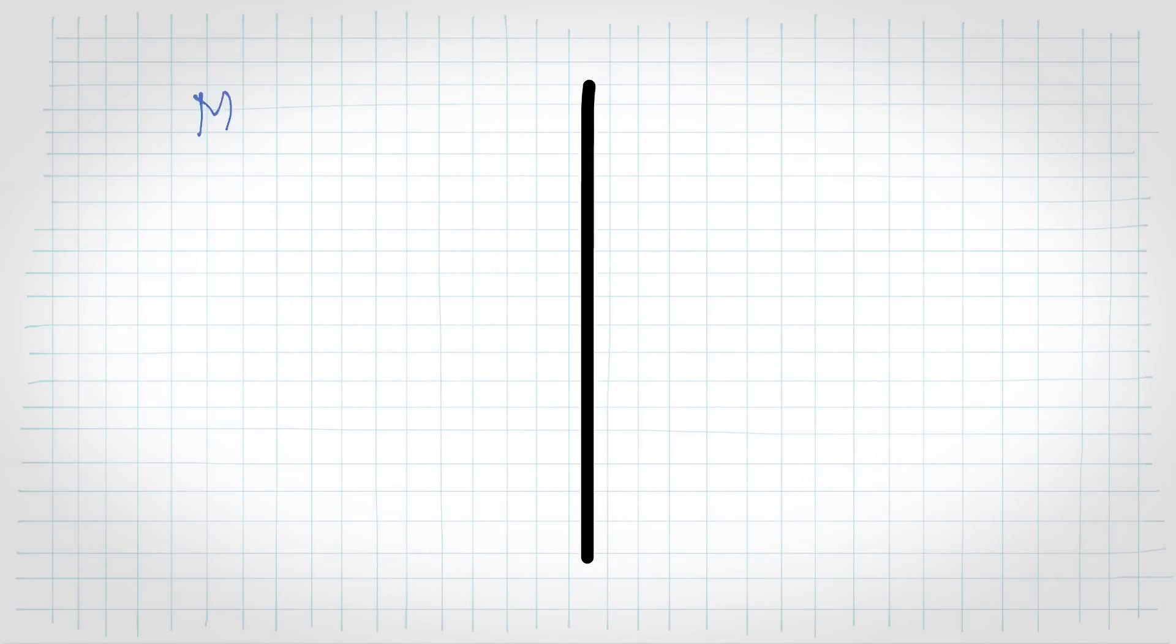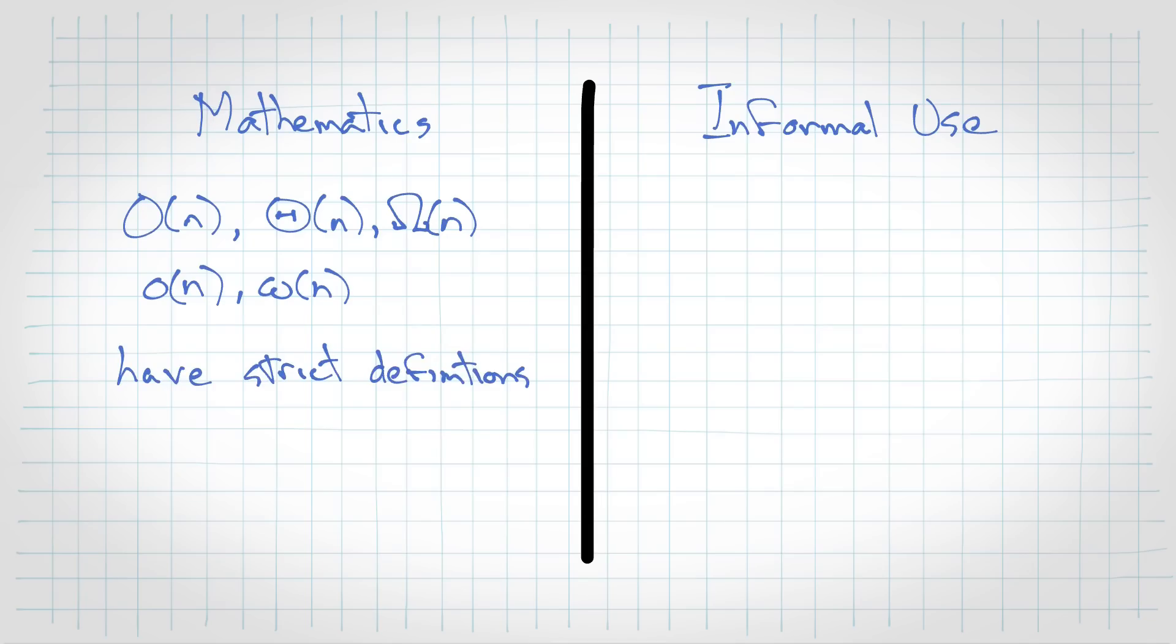Here's another thing to note. In software engineering, we tend to use big O a bit differently. That is to describe roughly how fast we expect something to run. Like with quicksort, we often refer to it as order n log n. But that's kind of the average case, and it's often stated separately to have a worst case of order n squared. So we kind of play a bit fast and loose with the definitions and terminology of big O, when something more like big theta might make more sense. So just keep that in mind.